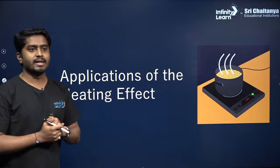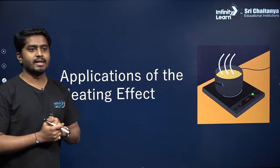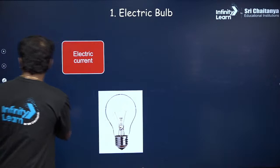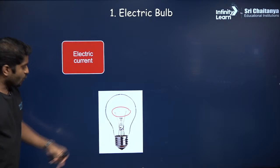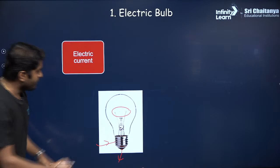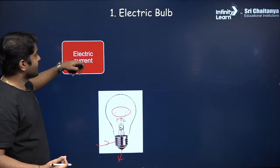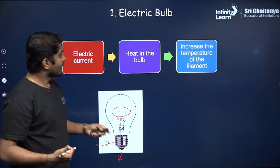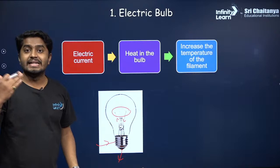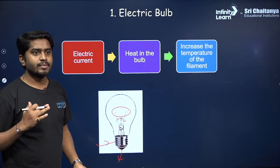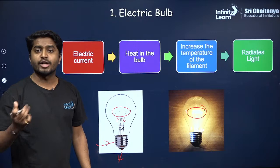Now let's look at some applications of the heating effect of electric current. Consider an electric bulb. You can see the filament inside. When current flows through this filament, heat is produced. The temperature of the filament increases to more than 1000 degrees, and because of that it starts to radiate light.